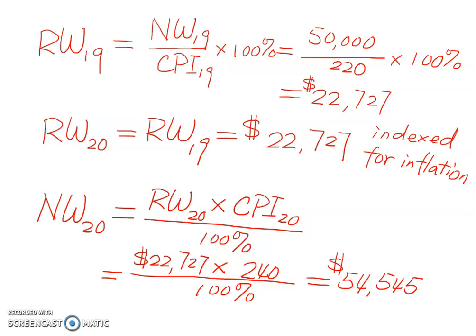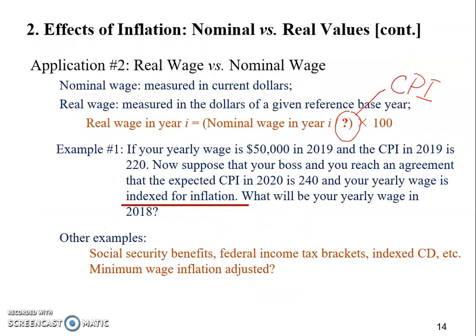Compared to the previous year 2019, you're going to receive $4,545 more. However, your standard of living doesn't change. Those extra $4,545 just help you keep up with the increase in the overall price level — it's just enough to protect you from inflation.